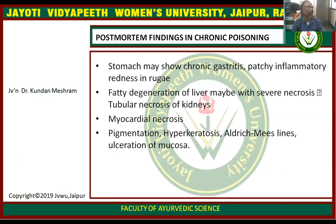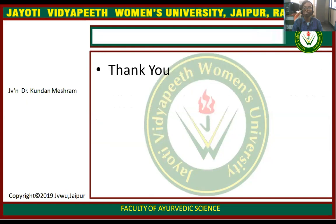Post-mortem findings in chronic poisoning: stomach may show chronic gastroenteritis, patchy inflammatory redness in rugae, fatty degeneration of liver, possibly severe necrosis, tubular necrosis of kidney, myocardial necrosis, pigmentation, hyperkeratosis, and ulceration of mucosa.